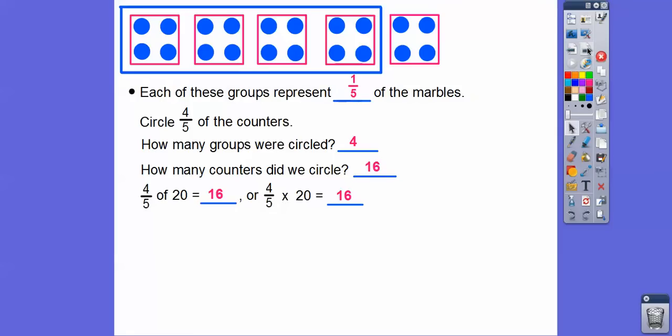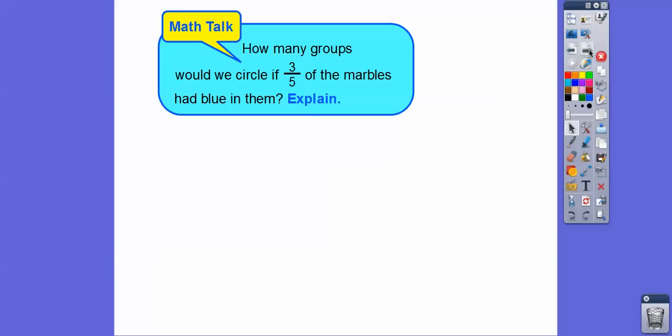So what we did is we separated them up into this many groups right here, the denominator. That's how many groups we separated them up, and then this is how many of the groups that we count in each one. So as long as we separate them up into this many groups and then circle this many after we separated them up into this many groups, that'll be our answer. So 16 of the marbles have blue in them. We always got to answer the question in the context of the problem.